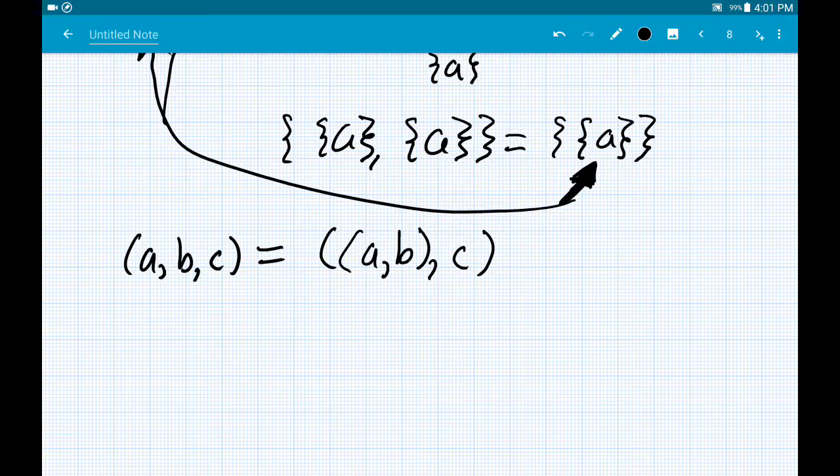So there's the axiom of pairing. Like I said, it gets you obviously pairs, it also gets you singletons, and it gets you tuples of length n.